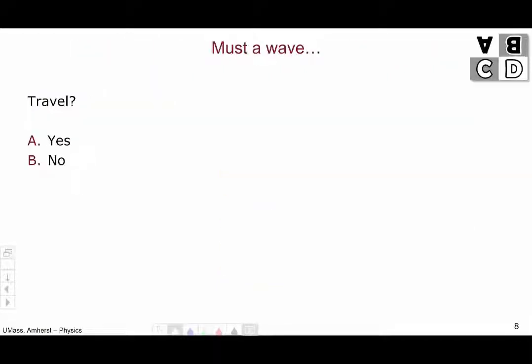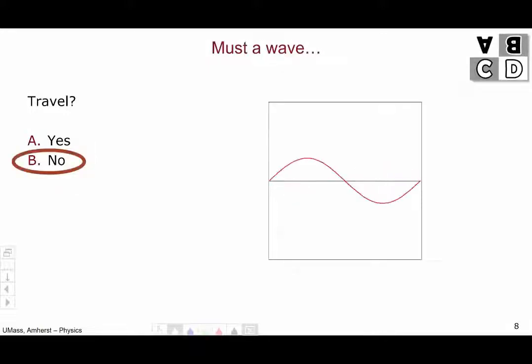So first things first. Must a wave actually go anywhere? Must a wave travel? Well, no. Sure, most waves go somewhere. Water waves travel across an ocean, for example. But here's an example of a wave that doesn't really travel. A guitar string when you pluck it. Certainly, the string waves back and forth, but the string doesn't go anywhere. The wave stands on the string. This is called a standing wave. So traveling cannot be part of our definition of a wave.